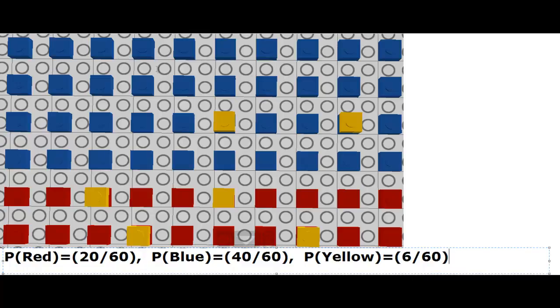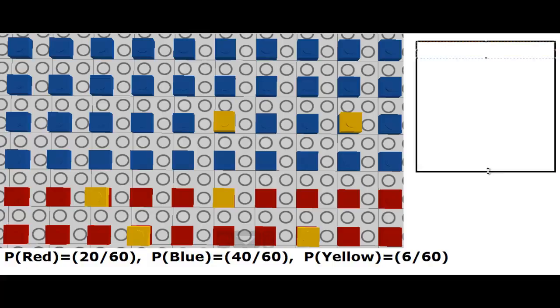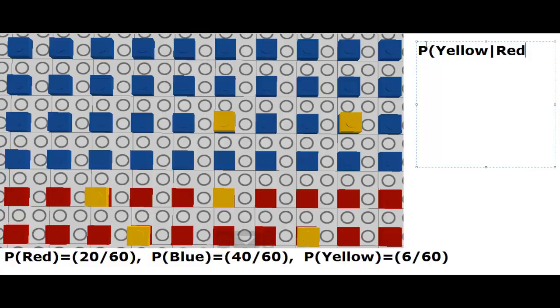Now, we would like to obtain this probability here, probability that the brick will be yellow, given that we already have a red brick.